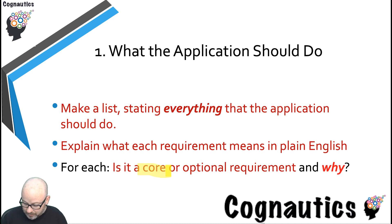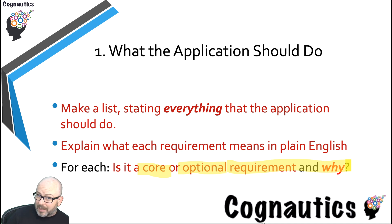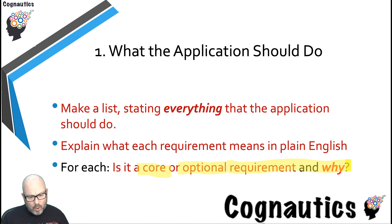For each function you state the application should have, you also need to identify whether it's a core or optional requirement and why. You'll need to let Justin know that you understand that certain things he absolutely needs, but others — well, he can have them, but they're not fundamental to his business; they're more of an add-on, a luxury if you like. Once you've completed that part, we can go on to stage two.